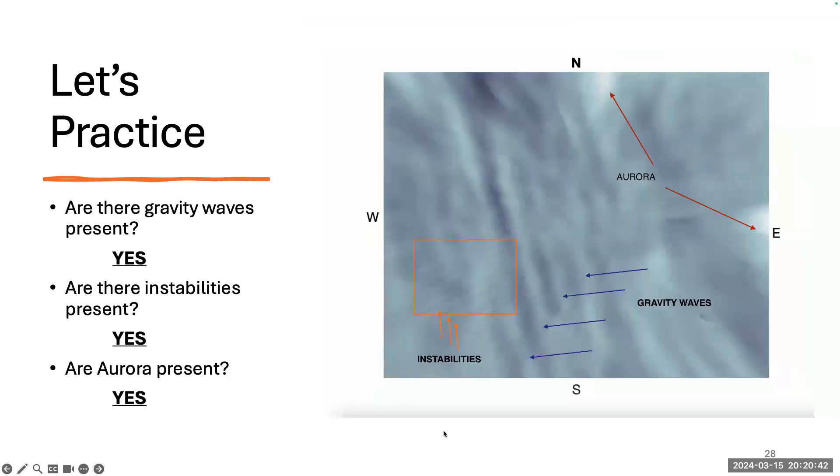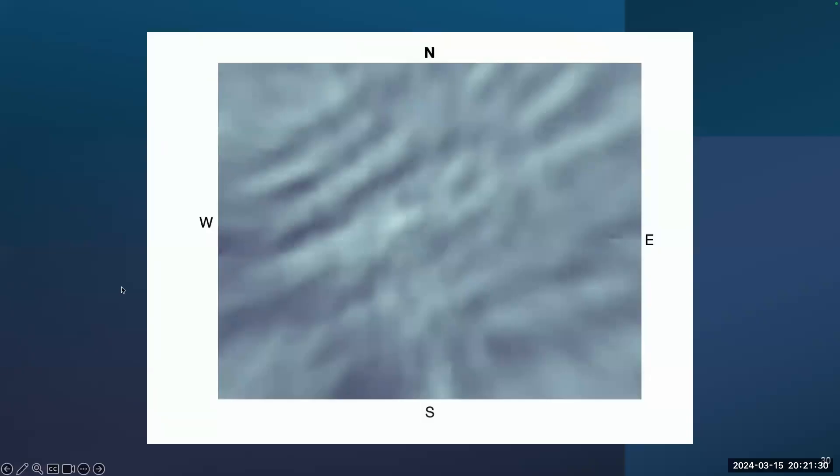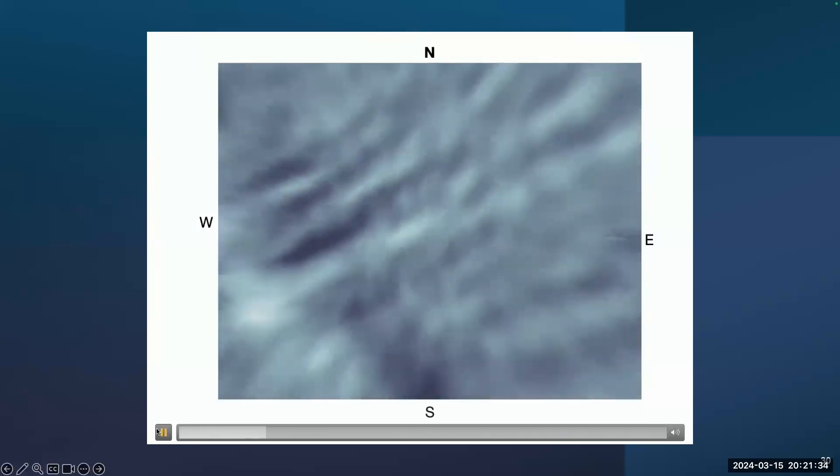Yes. Very good. A plus. Yes. Yes and yes to all. Very good. That is right. There are gravity waves, instabilities, and aurora. Okay, so this is hopefully, if you want to take out your phones and use your camera, you can connect to the QR code. I really hope it's going to work.